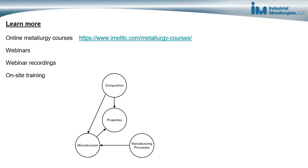If you'd like to learn more, we offer a lot of different training opportunities for learning about metallurgy. We have online metallurgy courses available at the URL shown here. We also offer webinars, webinar recordings, and onsite training — information about all of these is available on our website. Through this training, you'll learn about the relationship between properties, composition, microstructure, and manufacturing processes, helping you better select materials and processes for fabricating components and deal with failures and quality problems. Start now — don't waste time — start learning metallurgy so you can be more productive, more efficient, and a better engineer when dealing with metals.